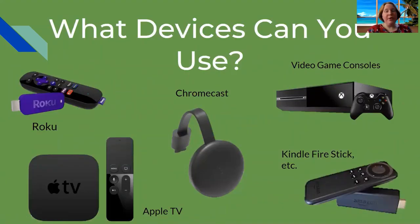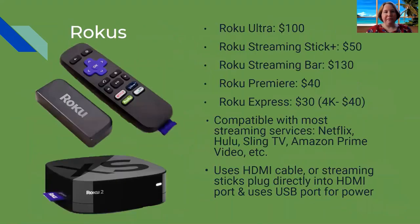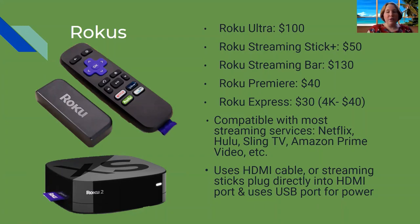So what devices can you use? We'll go over some of the more popular ones: the Roku, Apple TV, Chromecast, Kindle Fire, and video game consoles. The Roku is the most popular right now. They have lots of different options depending on what you're looking for and how much you want to pay. The Roku Ultra, one of the more expensive ones, comes with Bluetooth, a headphone jack, HDMI cable, and a voice remote. Some remotes can also control your TV's volume and power.